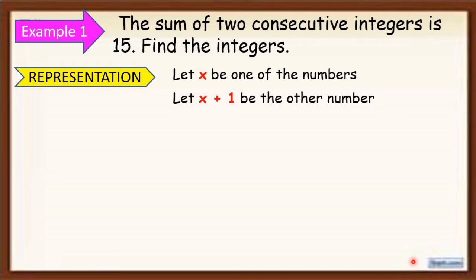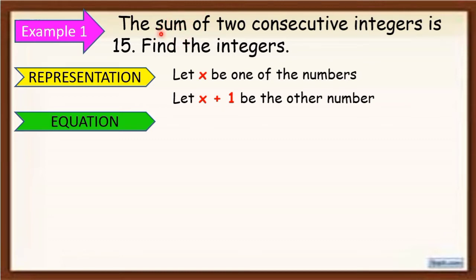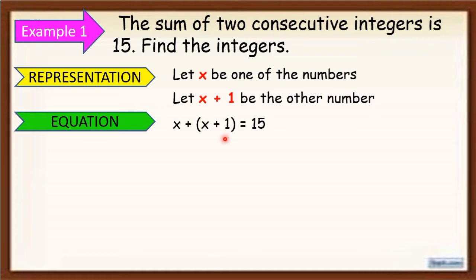After we make a representation, we are going to make an equation. We know from the given that kapag pinag-add mo yung dalawang magkasunod na integers, yung sagot ay 15. To make an equation, we just add the two numbers from our representation — which is x, the first number, and x plus 1, the second number. So the equation is x plus x plus 1 is equal to 15.